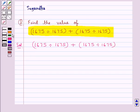Now we know that when we divide a number by itself, then its value is equal to 1.